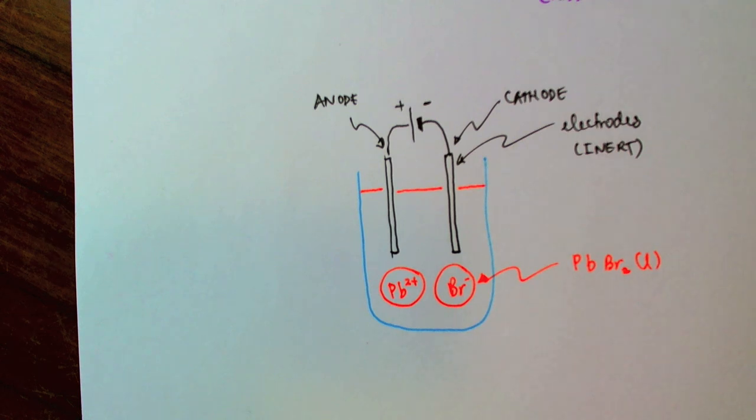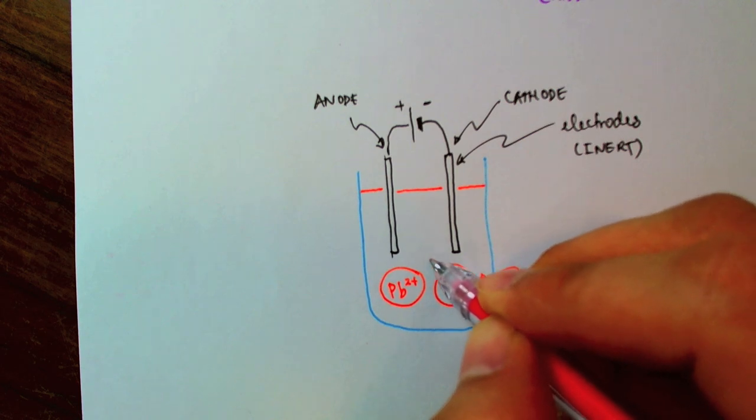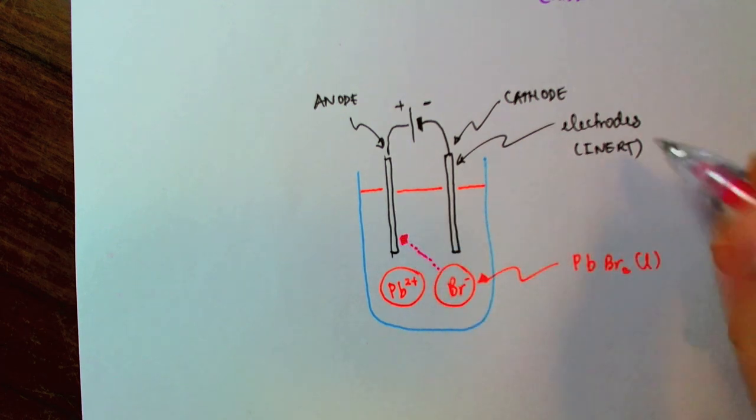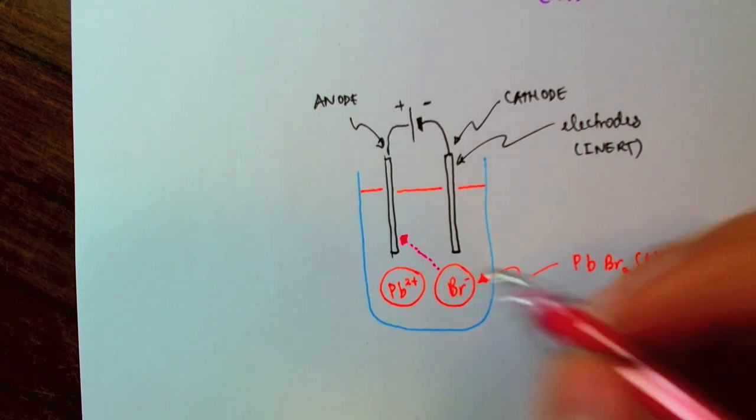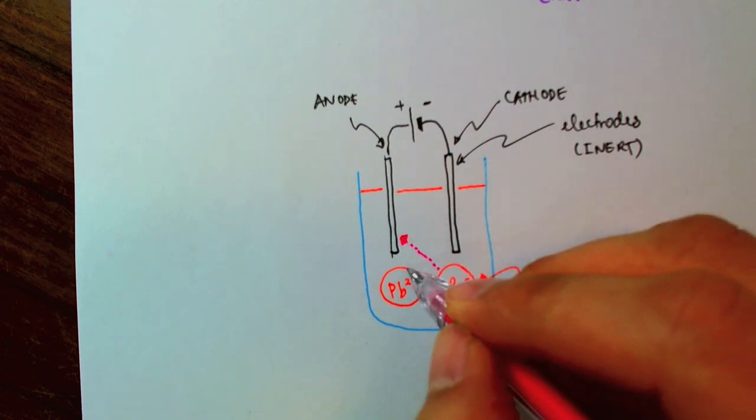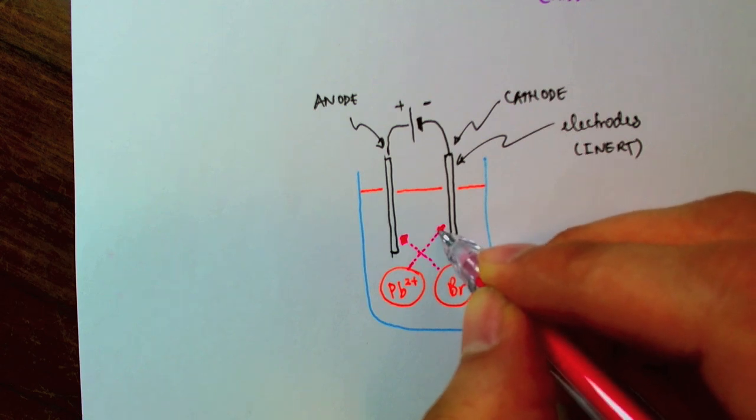So, what will happen is that because opposite charges attract, the lead ions are going to be attracted to the positive electrode, namely the anode. Sorry, the bromine ions will be attracted to the positive electrode, while the lead ions will be attracted to the negative electrode.